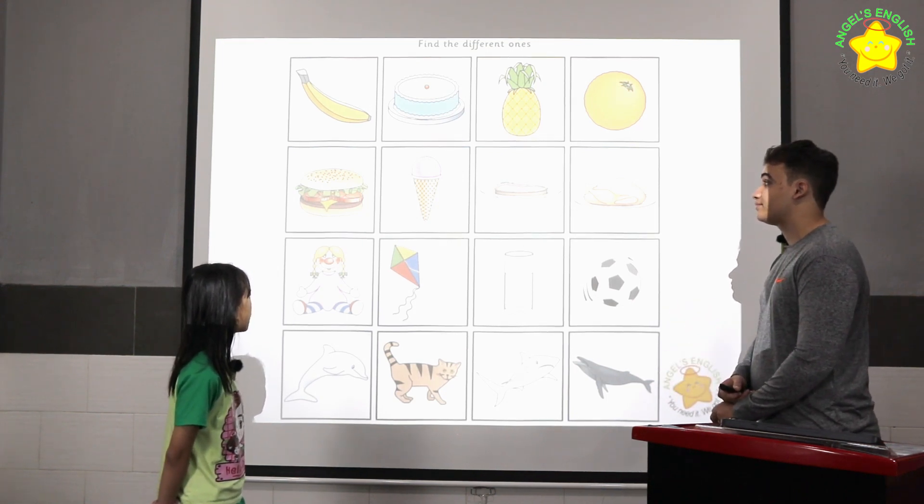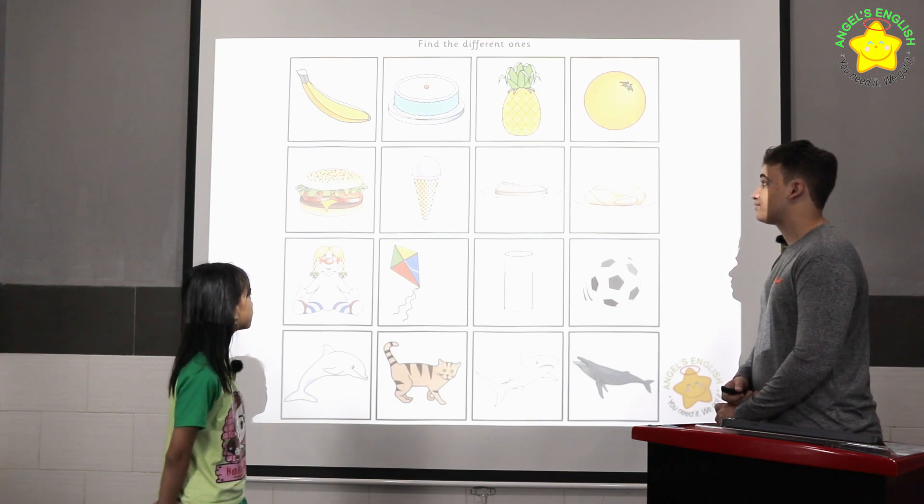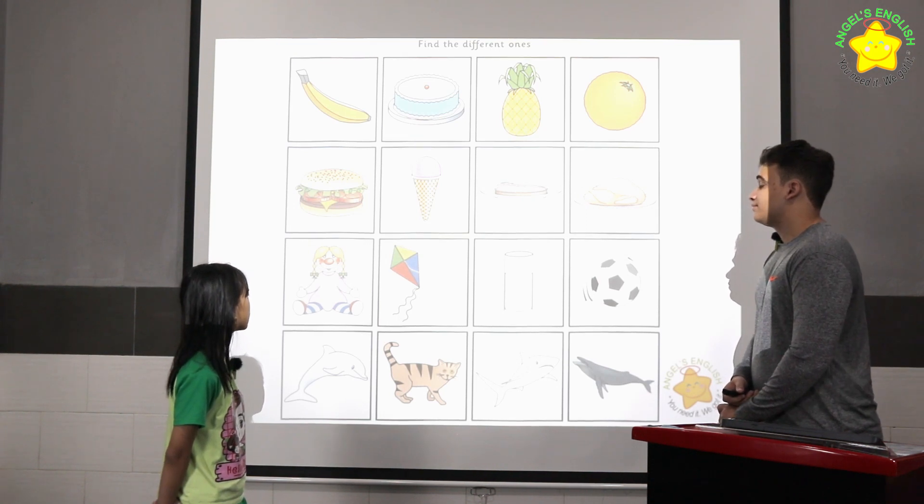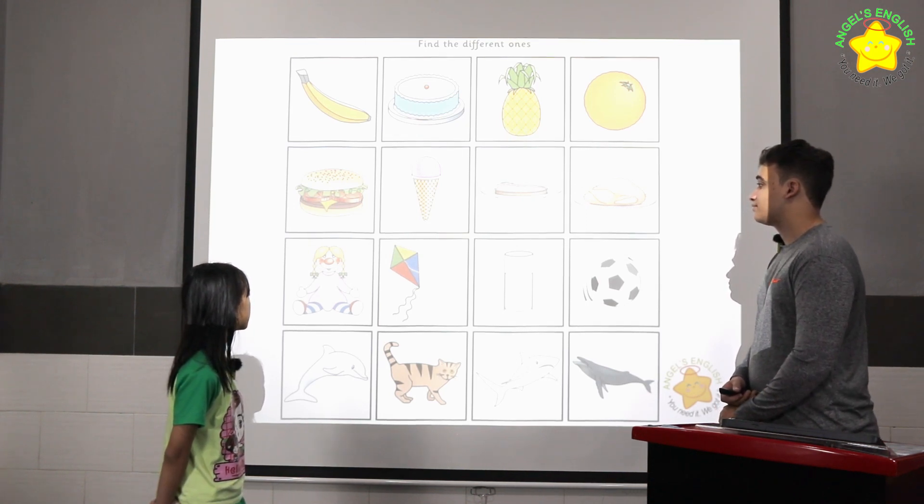I choose ice cream because hamburger, meat, and chicken is food. I choose water because dog, cat, ball is toy.